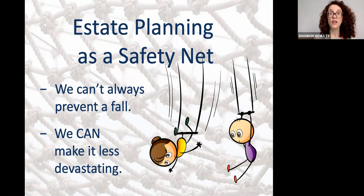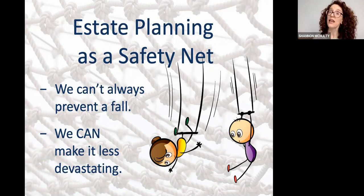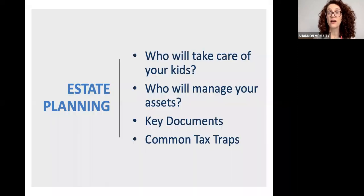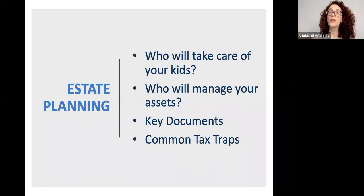When we talk about estate planning, think of it as creating a safety net for your family. We can't always prevent a tragedy — none of us are completely immune — but we can make it less devastating for our loved ones. This year has taught us we cannot foresee the future, and unpredictable things happen. So it's really important to put some planning in place beforehand.